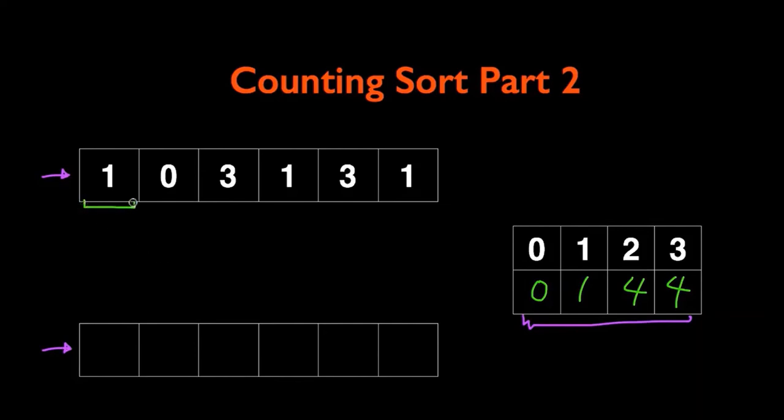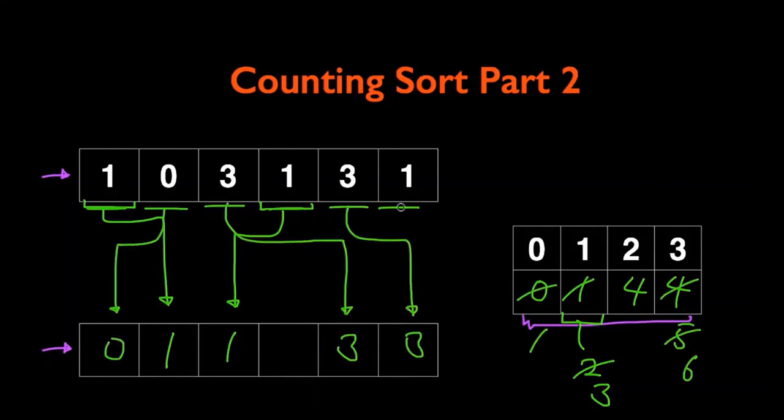For the first element 1, we will check the starting index from the array that we created in step 3, and that index is 1. Then we will increment the starting index by 1. This is to ensure that when 1 is repeated a second time, it gets different indices than the previous one. We are going to do this for all the elements of the array until we get the last element.